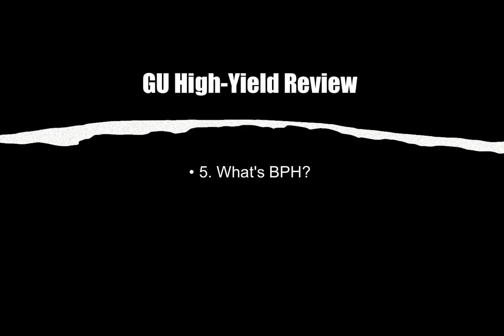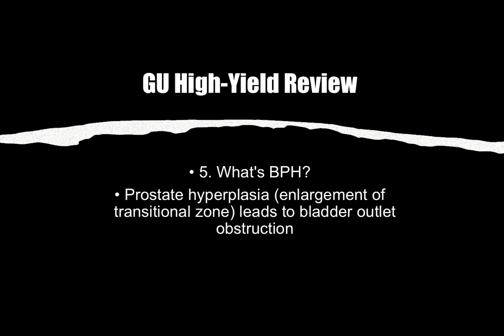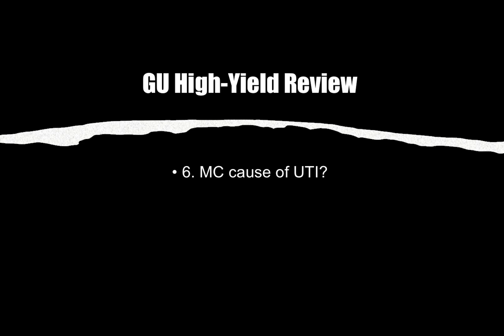Number five: What is BPH? BPH is benign prostatic hyperplasia — enlargement of the transitional zone which leads to bladder outlet obstruction. Number six: What is the most common cause of UTI? They're going to give you a UA and ask which bacteria is most likely the cause, and that is E. coli.